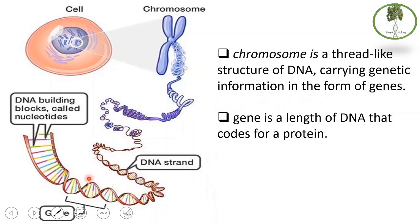The chromosome is a thread-like structure of DNA carrying genetic information in the form of genes. A gene is a segment of DNA that codes for a protein. The code is made up of nucleotides and is read in the cytoplasm by a machine called a ribosome to make a proper protein.